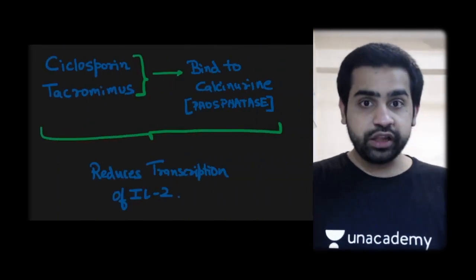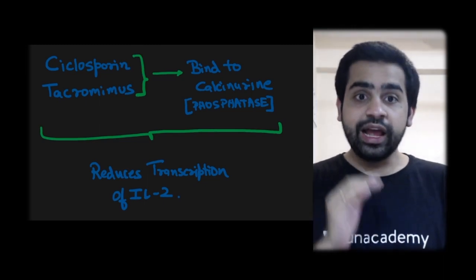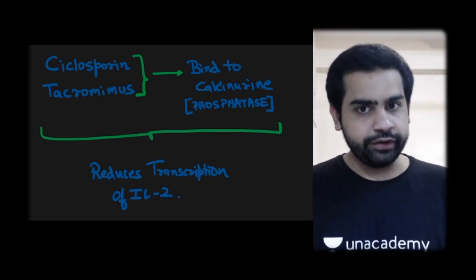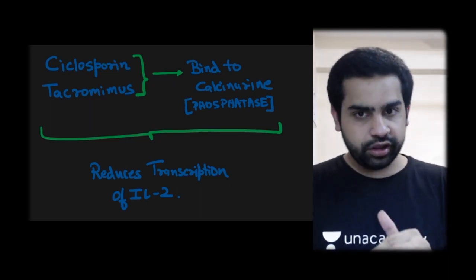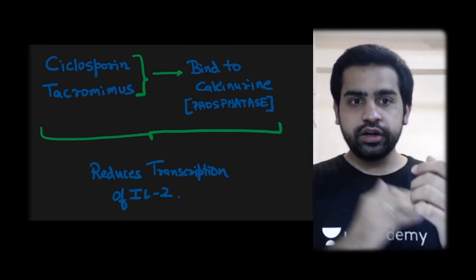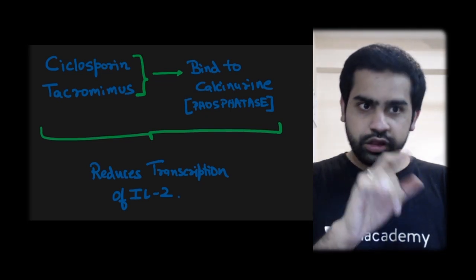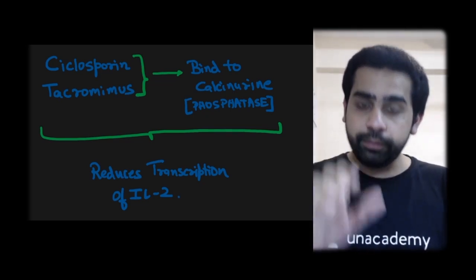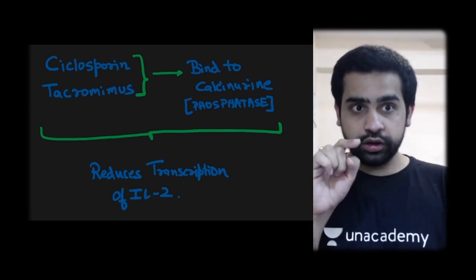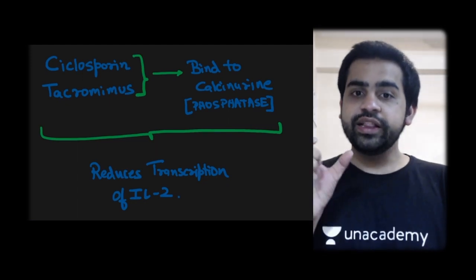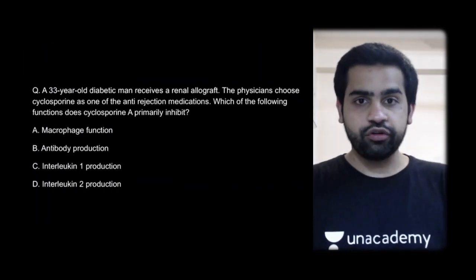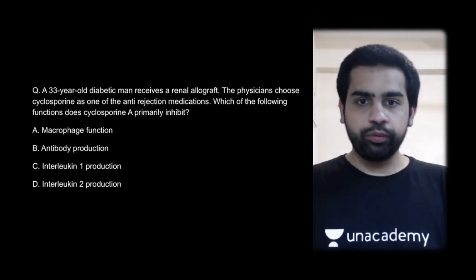Cyclosporine and tacrolimus enter inside the cell and bind to calcineurin, which is a phosphatase with enzymatic activity. This combination of the drug with calcineurin reduces the transcription of interleukin-2. Cyclosporine does not act directly — it inhibits calcineurin, which is necessary for interleukin-2 transcription, so interleukin-2 cannot be transcribed. The answer is inhibition of interleukin-2 production.